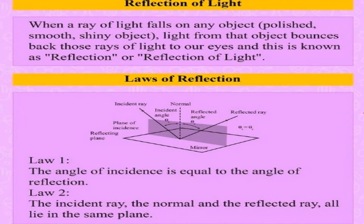Reflection: when a ray of light falls on any polished object, light from that object bounces those rays back to our eyes. This is known as reflection, or reflection of light. There are two laws of reflection. The first says the angle of incidence is equal to the angle of reflection. The second says the incident ray, the normal, and the reflected ray all lie in the same plane.